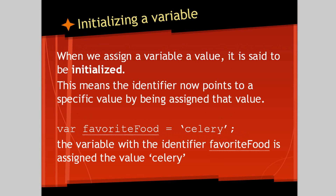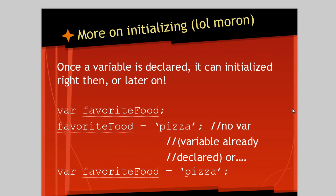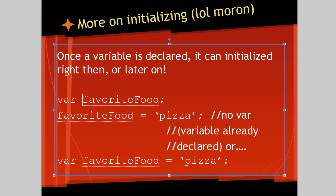When we assign a variable a value, it's said to be initialized. This means the identifier now points to a specific value by being assigned that value. So if we started with this: var favoriteFood is equal to celery. The variable with the identifier favorite food is assigned the value celery. Once a variable is declared, it can be initialized right then or later on. We type var to declare a variable, give it an identifier — favoriteFood in camel case — first letter lowercase, second word uppercase.